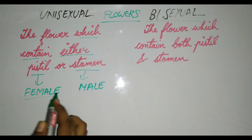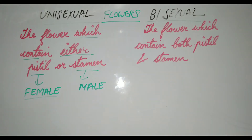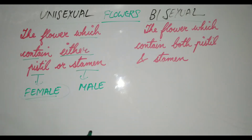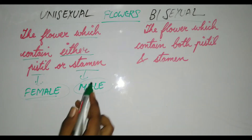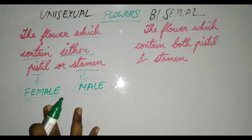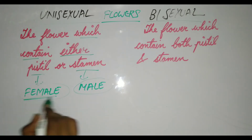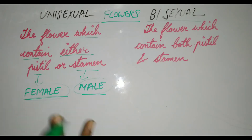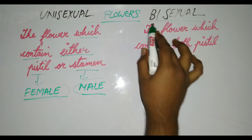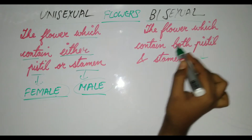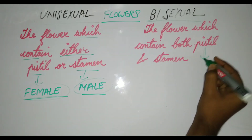The unisexual flower contains only one of them — either the female part (pistil) or the male part (stamen), but not both together. If a flower contains both, that is bisexual. Remember: 'bi' means two, so bisexual means the flower contains both pistil and stamen.